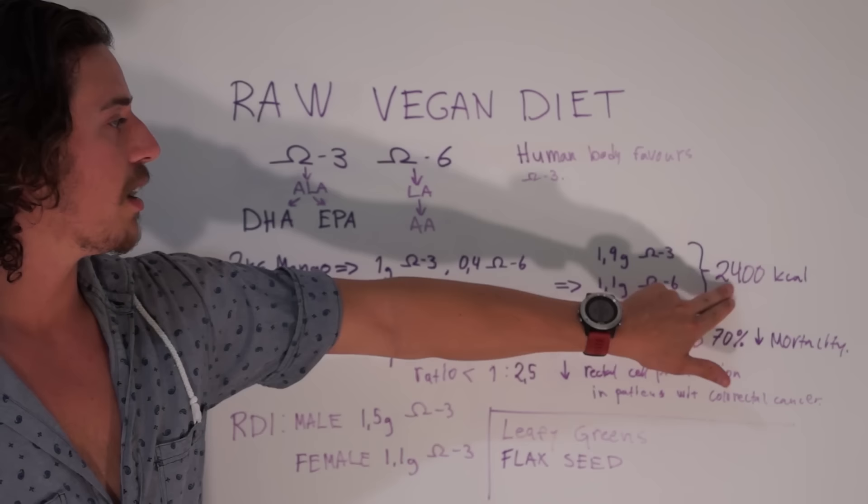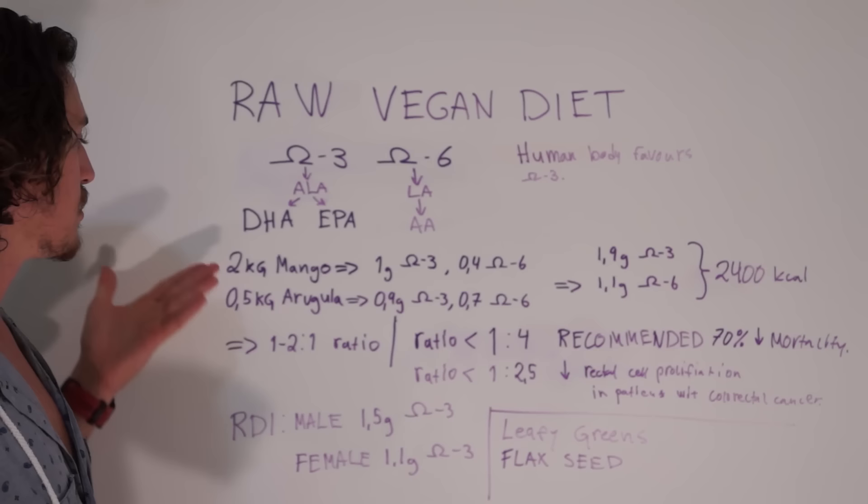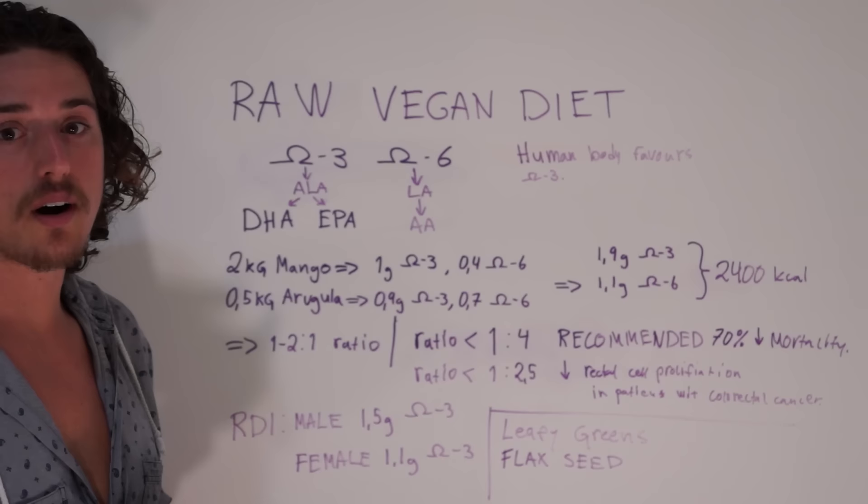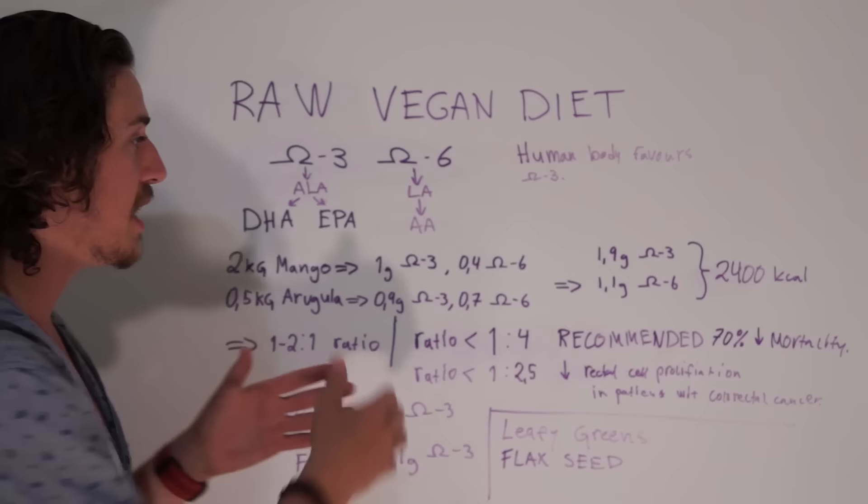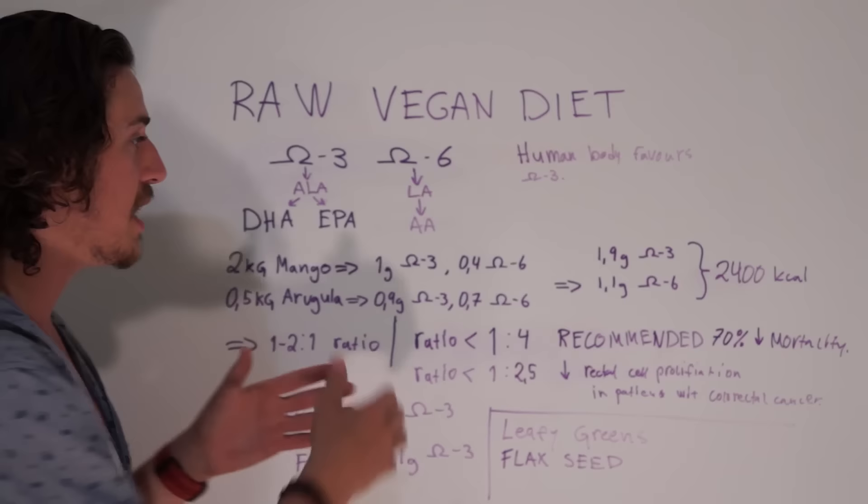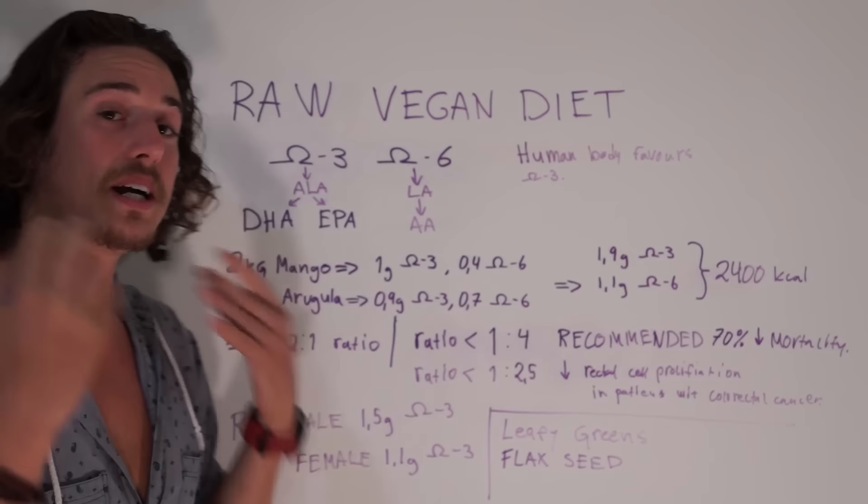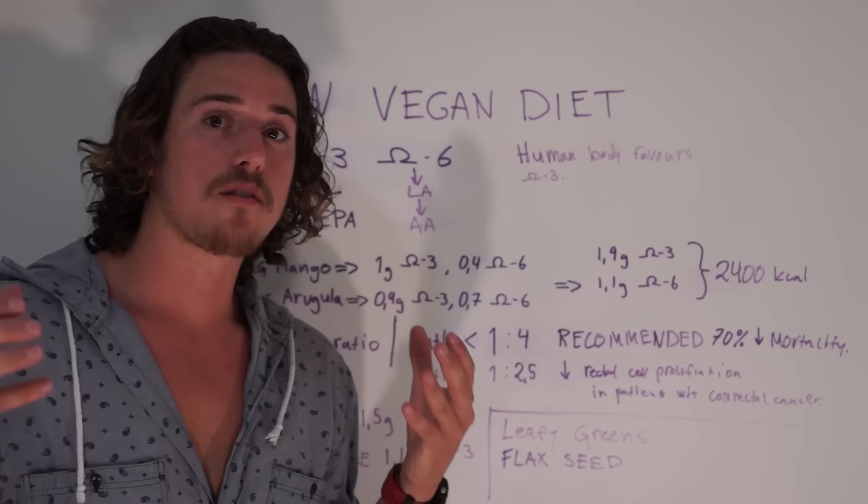This claim is science-based, and this is only for 2,400 calories. If you are active you are going to eat more than this, so you are going to hit these targets easily. Some people might say two kilograms of mangoes is a lot, but half a kilo of arugula is not a lot. Considering that two kilo mangoes is for maybe breakfast and lunch, that's one kilo for each meal. If you type in bananas, the ratio becomes pretty much similar because most fruits have pretty much the similar ratio here between omega-3 and omega-6. It's really easy to get enough fat on a raw vegan diet.